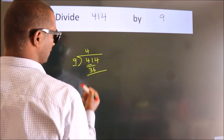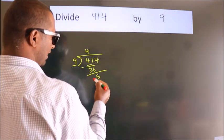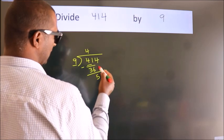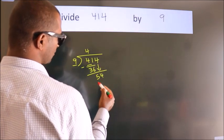Now we should subtract, we get 5. After this, bring down the beside number. So 4 down, so 54.